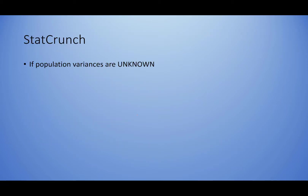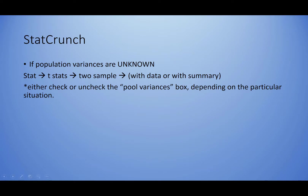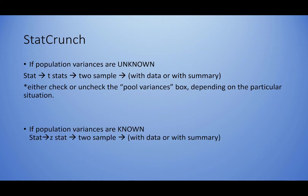All of this can take a long time to do by hand, so if you are working with StatCrunch we can get this done very quickly. If the population variances are unknown — Situations 1 and 2 — go to Stat → T-Stats → 2-Sample → With Summary or With Data. To distinguish Situation 1 from Situation 2, there is a box that says 'Pool the variances' — you check or uncheck it depending on the problem. If population variances are known — Situation 3 — go to Stat → Z-Stats → 2-Sample → With Summary or With Data.